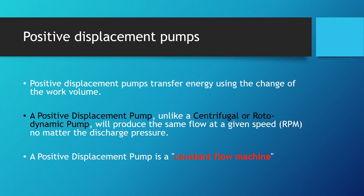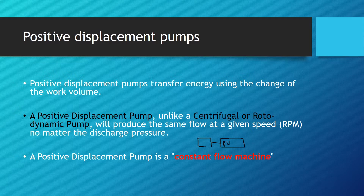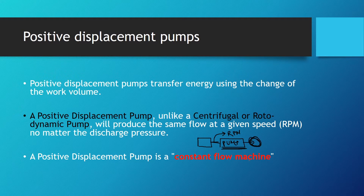So what does that mean? If we have an AC motor connected to a pump and the shaft is moving at a constant RPM, the flow of that pump is going to be the same no matter the pressure on the discharge side.